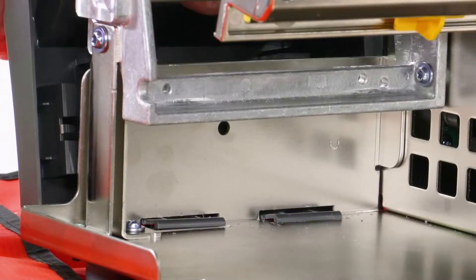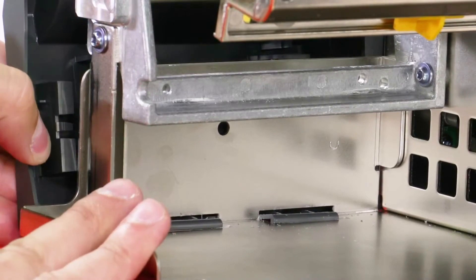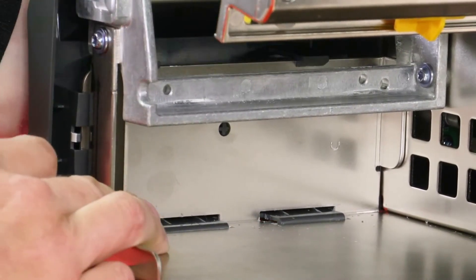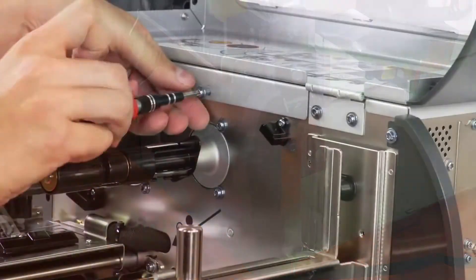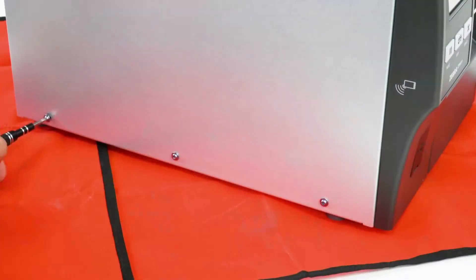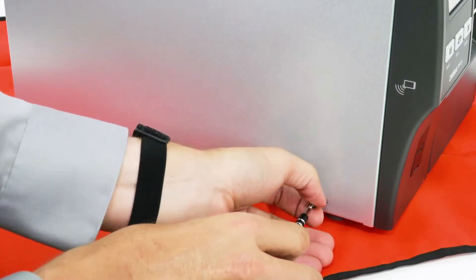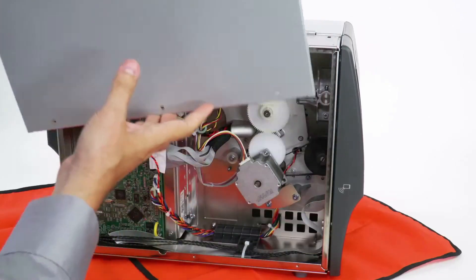Slide the lower front panel tabs onto the mounting slots. Snap it into place. Remove the four electronics panel screws. Remove the electronics panel.